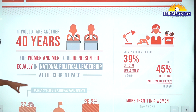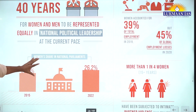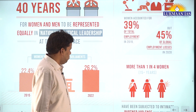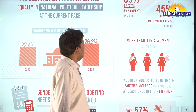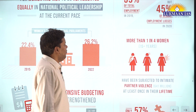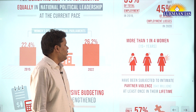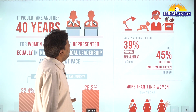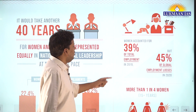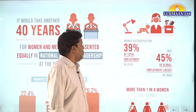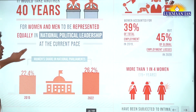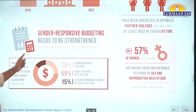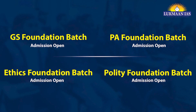These kinds of facts help you develop ideas. For example: more than one in four women aged 15 and above have been subject to intimate partner violence. Women accounted for only 39 percent but 45 percent of global losses in 2019 - during the pandemic, women suffered more. The keyword here is 'gender responsive budgeting' - this should come into your answer writing.